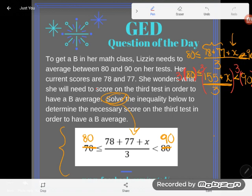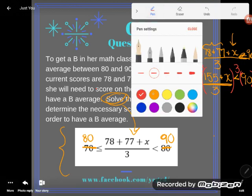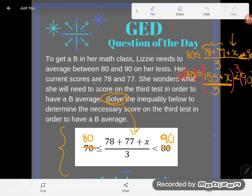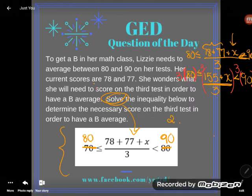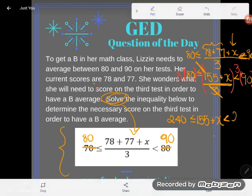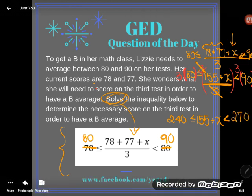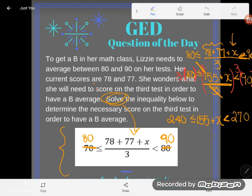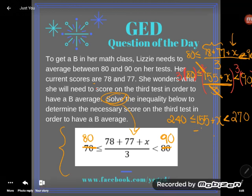Now let's see what my new inequality will be. 80 times 3 is 240. I'll leave my inequality symbol. Multiplying by 3 and dividing by 3 are opposite, so I have 155 plus X. I'll leave this inequality symbol, and 3 times 90 is 270. Almost done now, but I need X to be alone. In order to get X alone here, I would need this 155 to zero out. I will zero it out by minusing that 155.